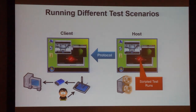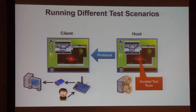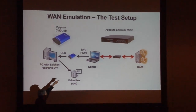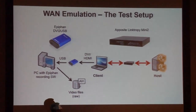In order to be able to record our tests, we connect to this client machine through an Epiphan box. The Epiphan box takes the video signal and feeds it into this box, which converts it into a USB signal similar to a video camera. You can attach another PC to the output of the Epiphan box and record the video. In total, you have the client machine connected through USB to a recorder machine, which records the raw video files.